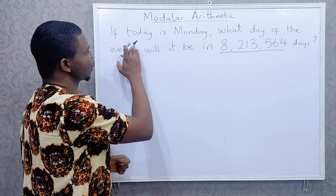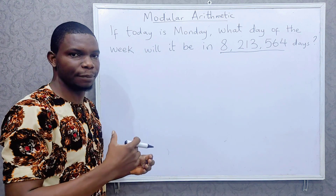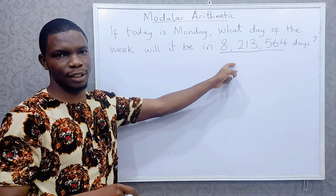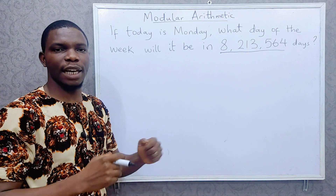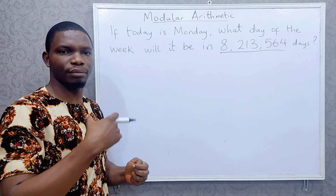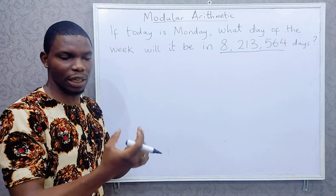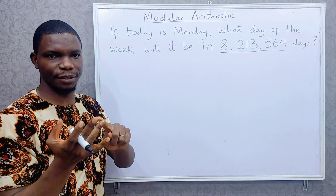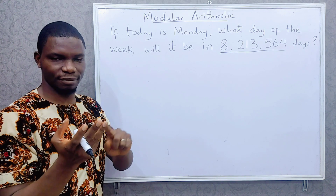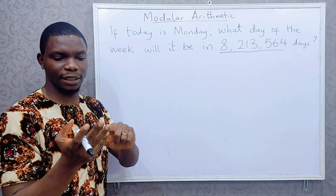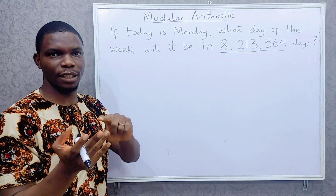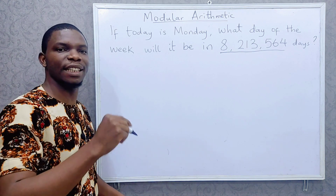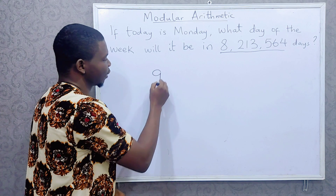Let me explain modular arithmetic with a smaller example. If today is Monday, what day of the week will it be in nine days time? You can count: after seven days it will be Monday again, so you are left with two more days — Tuesday, Wednesday.